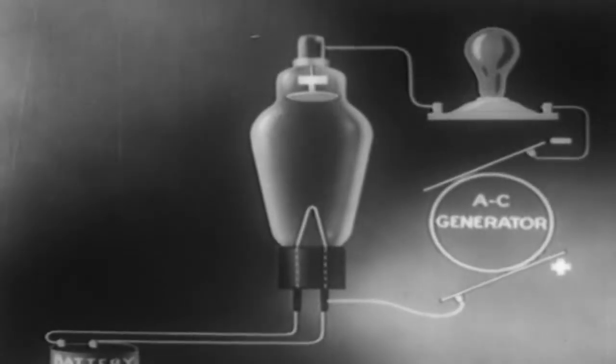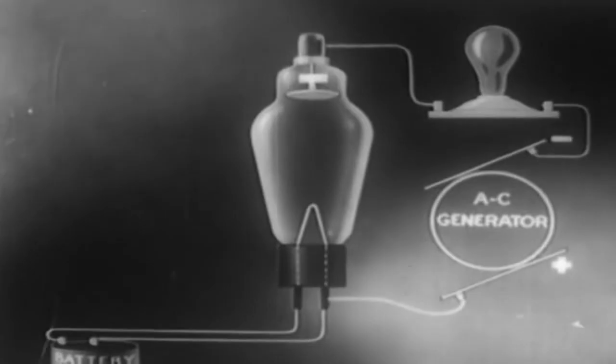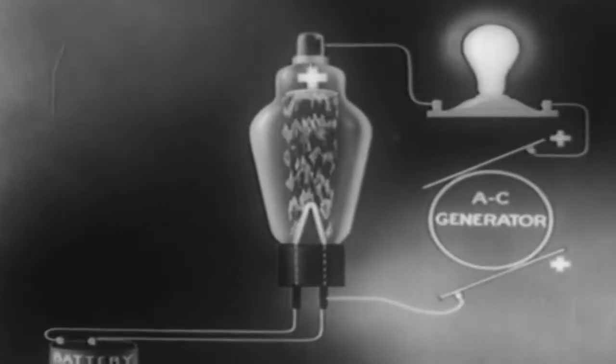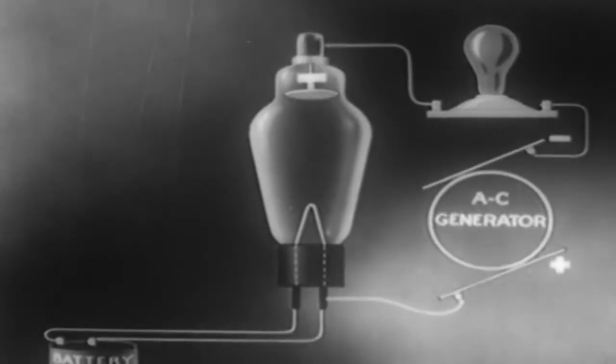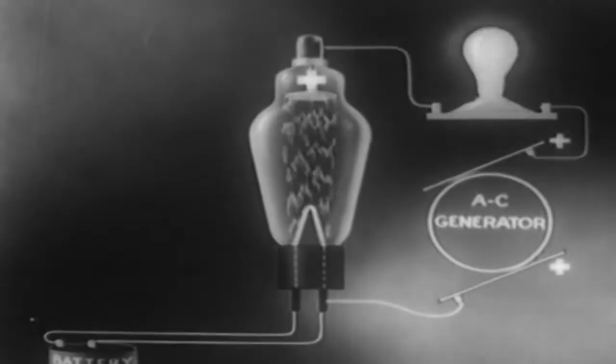When the anode is negative, the electrons are repelled and no current flows. In other words, because only the cathode can emit electrons, we have here what amounts to a one-way street.